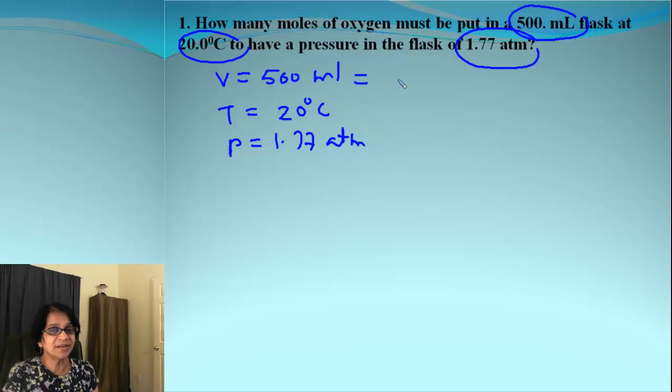What do we know about volume? For Ideal Gas Law, it must be in liters. Let's convert this to liters. And when we do that, we know we need to put 1 here. And this is 1 times 10 to negative 3. When we solve that, we get answer 0.500 liters.